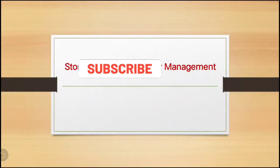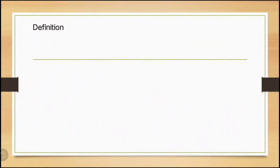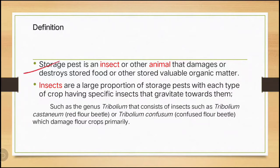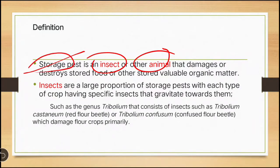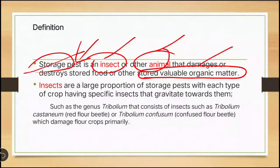Hello everyone, welcome to Insecta channel. Today we will start stored grain pests and their management. First we will see the definition. Storage pest is an insect or other animal — suppose a rat — that also causes damage to the stored product. So, storage pest is an insect or other animal that damages or destroys the stored food or other stored valuable organic matter.